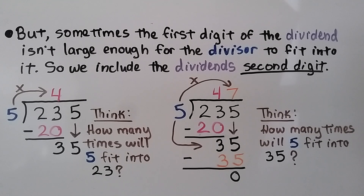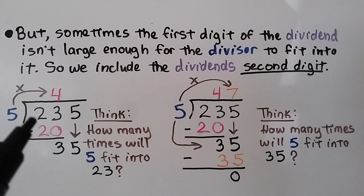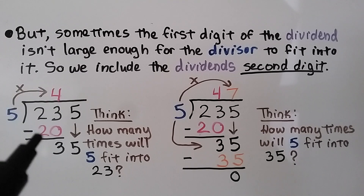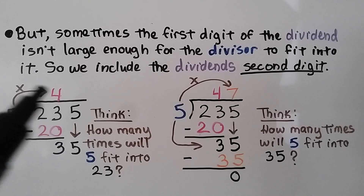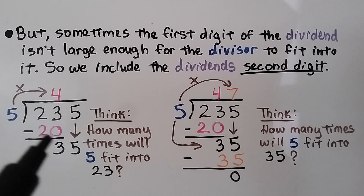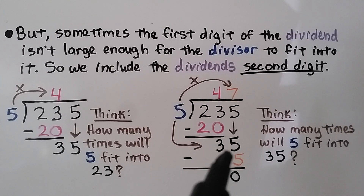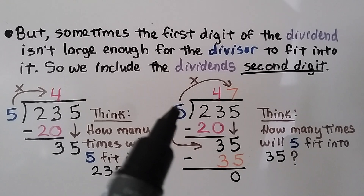But sometimes the first digit of the dividend isn't large enough for the divisor to fit into it, so we include the dividend's second digit. Can five fit into two? No. Can five fit into twenty-three? Yes. Five times four is twenty. We do the five times four, write our twenty here, do our subtraction, and get a three. Now it's the five's turn to drop down.